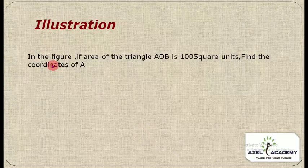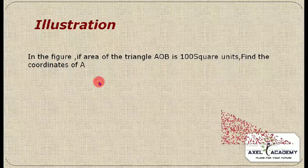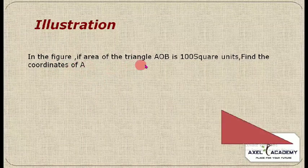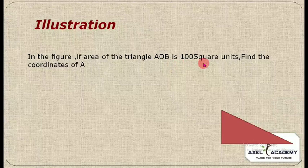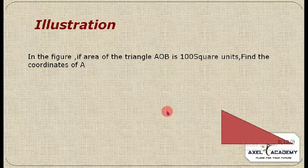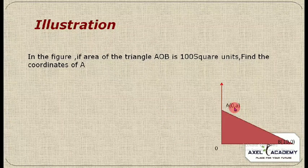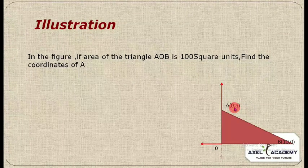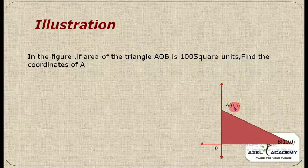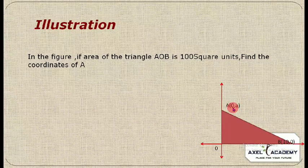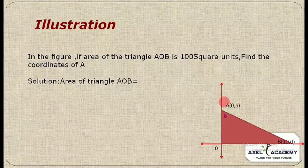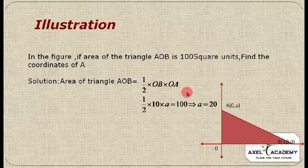Let's look at an illustration. In the given figure, if the area of triangle AOB is 100 square units, find the coordinates of point A. Since A lies on the y-axis, we can assume its coordinates are (0, a), because the x-coordinate on the y-axis is always zero.